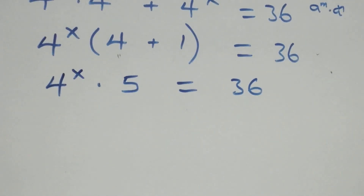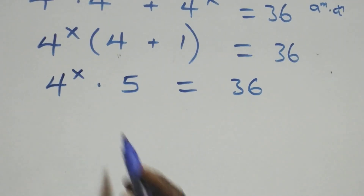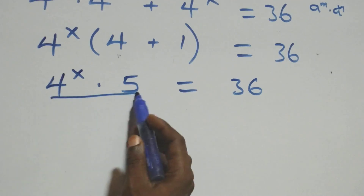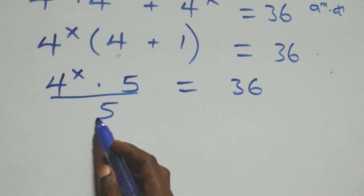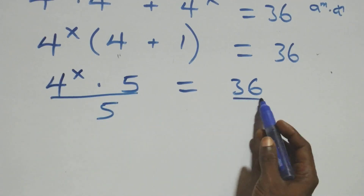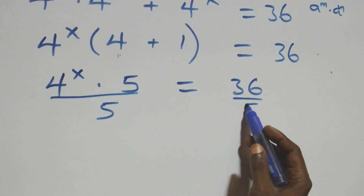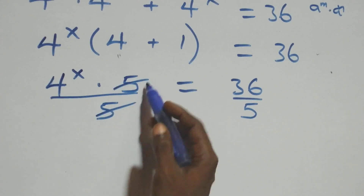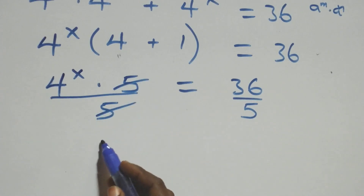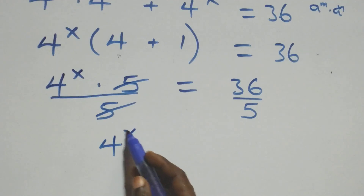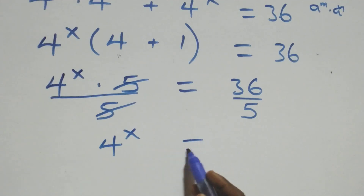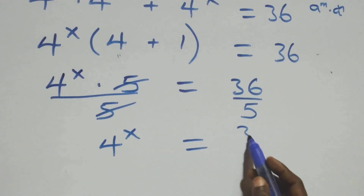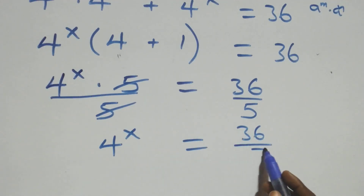Here we divide both sides by 5 — divide this side by 5 and also divide this side by 5. The 5s cancel each other, and we are left with 4 raised to power x equals 36 over 5.